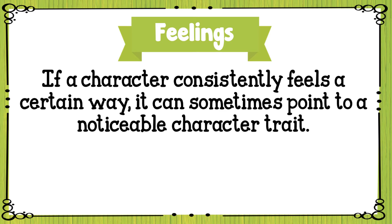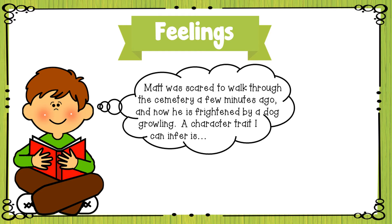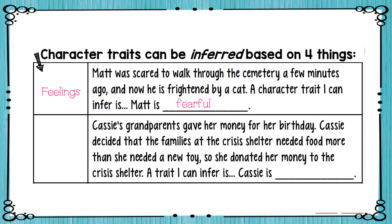If a character consistently feels a certain way, it can sometimes point to a noticeable character trait. For example, if a character feels jealousy toward other characters at multiple points throughout the book, jealous can be named as a character trait. Let's take a look: Matt was scared to walk through the cemetery a few minutes ago, and now he is frightened by a dog growling. A character trait I can infer is that Matt is fearful. On your notes page, in the first box — based on feelings — we inferred that Matt is fearful.